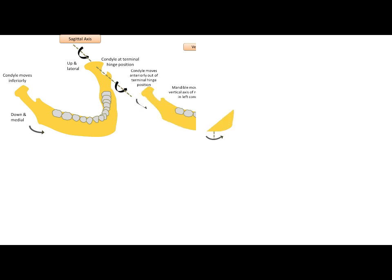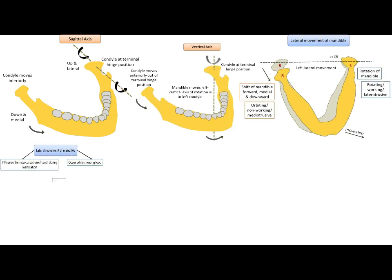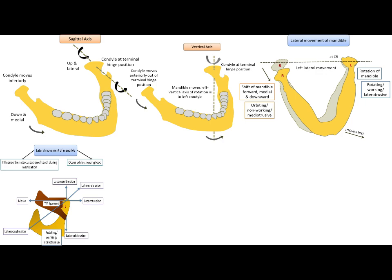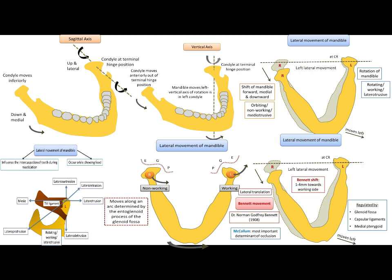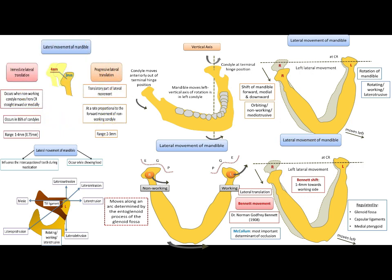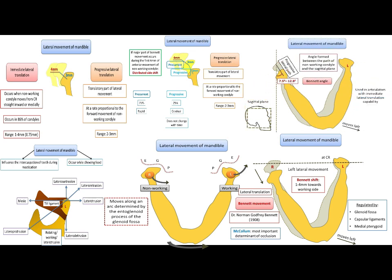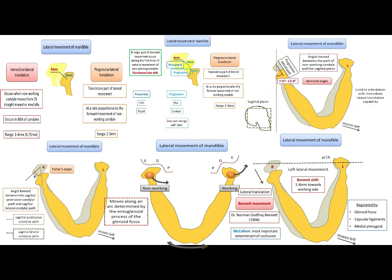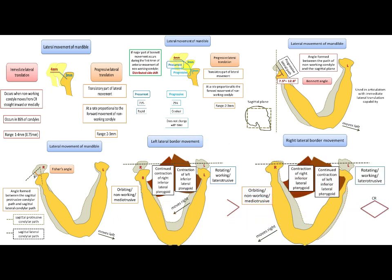This wraps up the presentation on the lateral movement of the mandible. We discussed the working condyle exhibiting rotation and the non-working condyle exhibiting Bennett movement. We also covered Bennett shift, Bennett angle, and Fisher's angle. To read about other types of mandibular movements, you can go through the previous presentations.